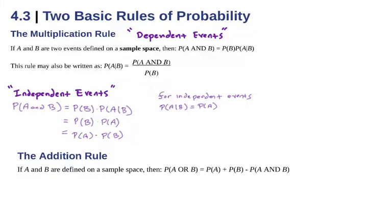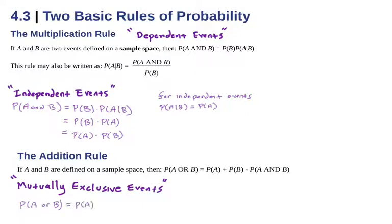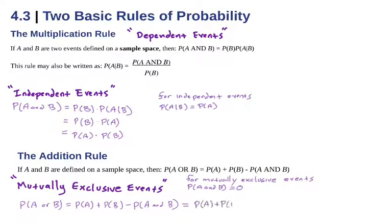The addition rule for probability of A or B — two events happening — is the probability of the addition of both of them minus any overlap, because we don't want to double count. For mutually exclusive events, we know that the probability of A and B equals 0, so that part just goes away and we get a reduced version: probability of A plus probability of B, because there is no overlap.